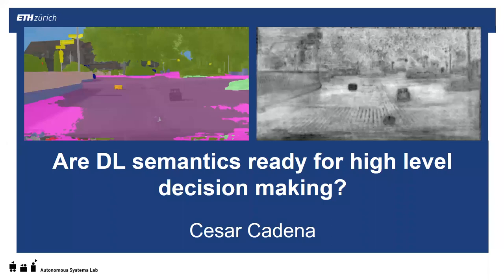Hi everyone. This is a talk for the Perception Action Learning from Metric Semantic Scene Understanding to High-Level Task Execution workshop for ICRA 2020. The title of the talk is posed as a question: Are deep learning semantics ready for high-level decision making?